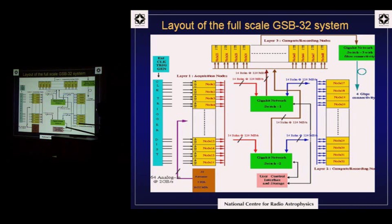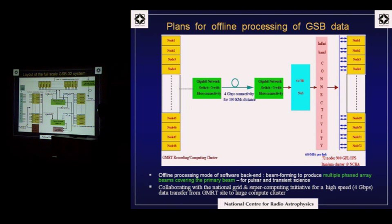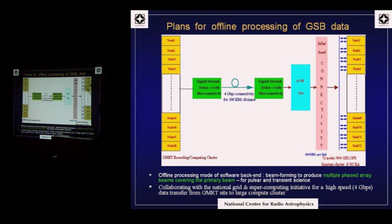The system layout has acquisition nodes which acquire the data, compute nodes which do most of the computing, and nodes which record the data. It supports two modes: raw data dumped to disk for offline analysis, or a real-time mode where all computations are done in real-time and final visibilities are stored to disk. We have plans to expand this further by taking data from the observatory all the way to our campus in Pune via a dedicated optical fiber link enhanced to four gigabit per second connectivity, bringing the power of much larger compute clusters available on the university campus for offline analysis, including producing multiple phased array beams to cover the entire primary beam.